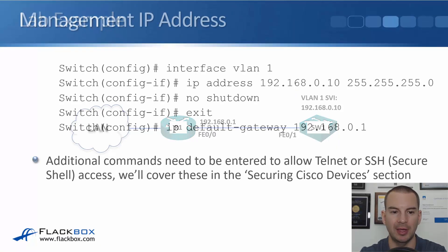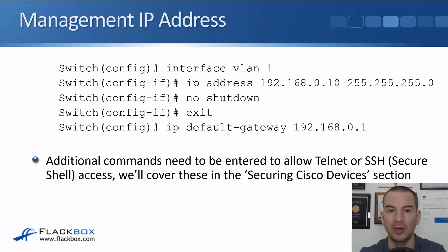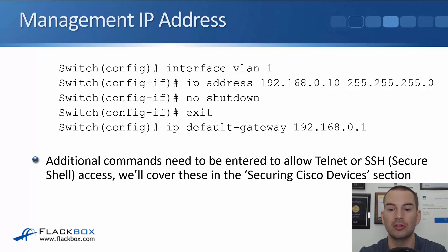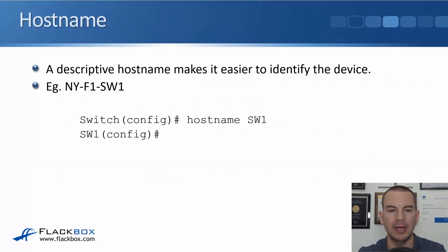Going back to the slides, I've noted that this is how you configure the management IP address. We actually have to do some additional commands to allow access via Telnet or SSH. I'm not going to show you that here because it's covered in the securing Cisco devices section. Right now I've got IP connectivity to the switch, so I can do things like ping out from there.